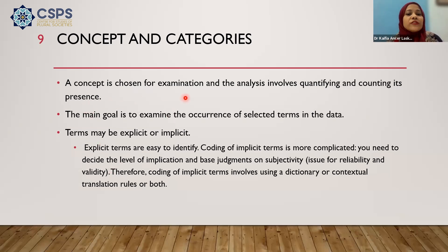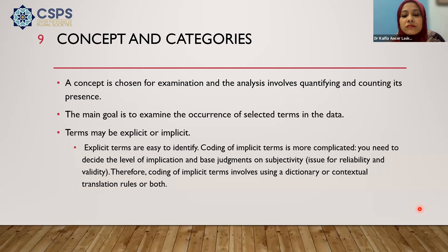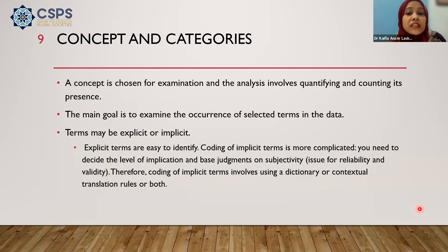The concept is chosen for examination and analysis, involving quantifying and counting how many times something is present — the frequency of appearance or absence. Here we try to explicate certain terms through coding. Then obviously the reliability test is done for validity of those codes — if I code something on my own and do not test the reliability and validity, how do I justify that the codes I found are the ones I wanted to find?